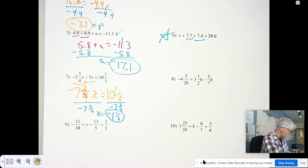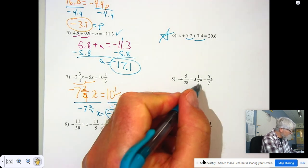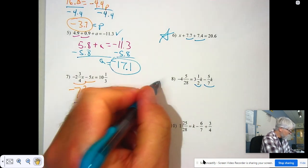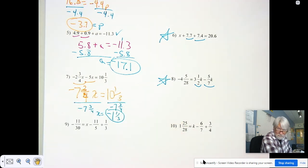So for number eight, you're going to combine 3 and a half with the minus 5 sevenths. Whatever your coefficient of k is, is what you'll divide the negative 4 and 5 twenty-eighths by to find the value of k.